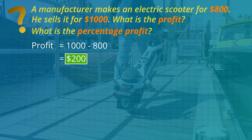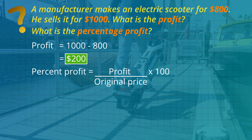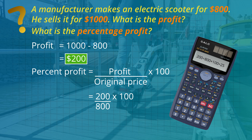Then we use the rule: percentage profit equals profit divided by the original price multiplied by 100. Let's substitute the numbers. The profit is $200, the original price was $800. So 200 divided by 800 multiplied by 100 gives the answer of 25% profit.